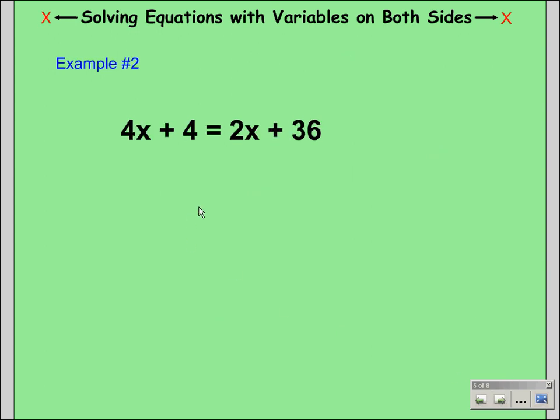Our next example is similar to example 1: 4x plus 4 equals 2x plus 36. Our 2x is positive, so to combine it with the 4x on the left side we're going to subtract 2x. This will remove our 2x on the right side, leaving us with 2x plus 4 equals 36.